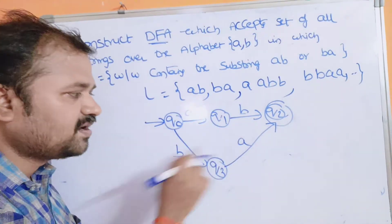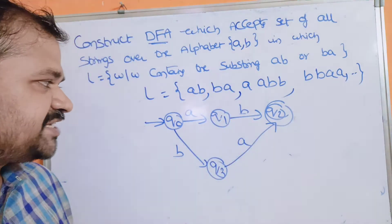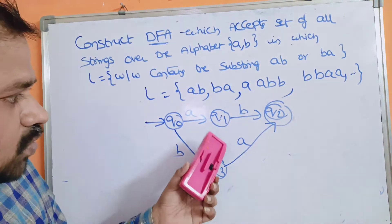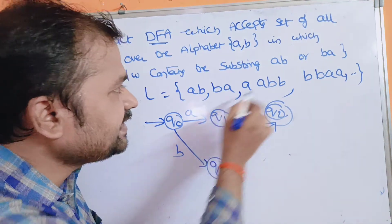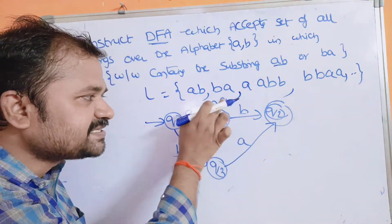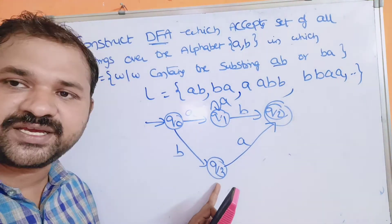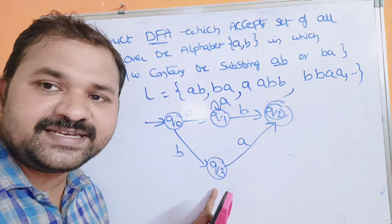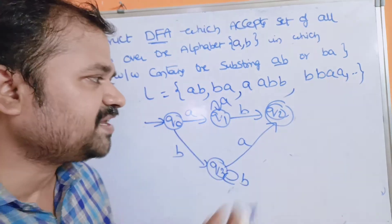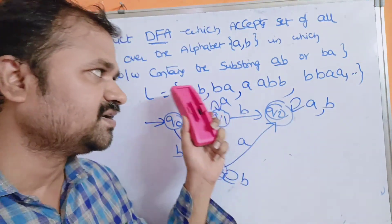Every string should contain either AB or BA. We have to apply the remaining symbols on the corresponding states. On Q1, B is already applied, so we apply A on Q1 — since AB is the substring, A on Q1 loops back to Q1. On Q3, A is already applied, so we apply B on Q3 — since BA is the substring, B on Q3 loops back to Q3. After AB or BA is matched, we can have any number of A's or B's, so Q2 has self-loops for both symbols.